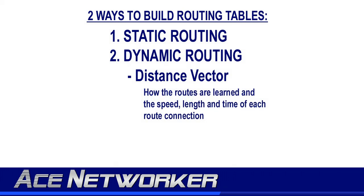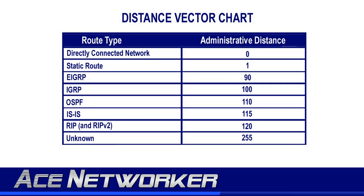Distance vector routing protocols build their routes, learn the different networks and routes to those networks, and list them in their routing table based on how they were learned and what estimated time and distance it takes for traffic to reach those networks on those routes and connections. Some of the distance vector routing protocols you'll see used are things like EIGRP, IGRP, RIP, and RIPv2. This table would be a good one to memorize or familiarize yourself with, as these are the default administrative distances for each of these distance vector protocols.